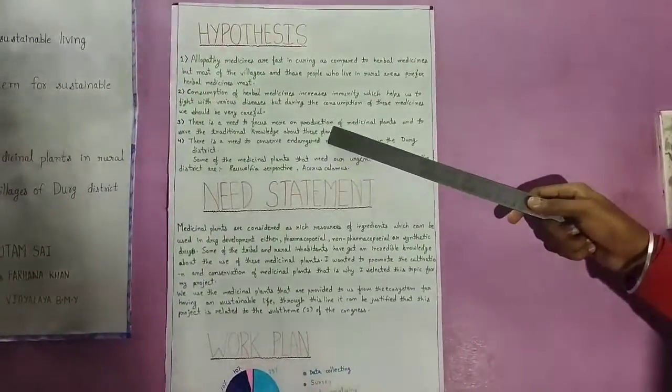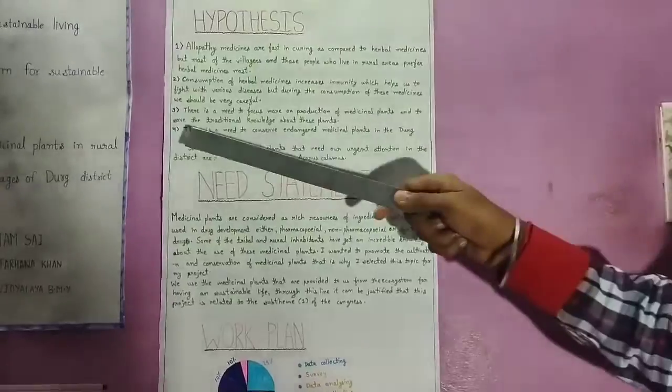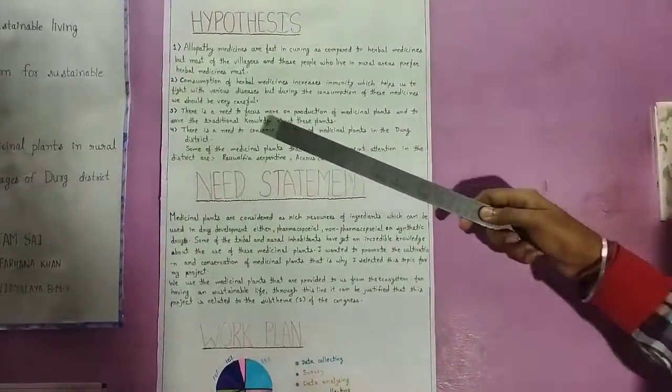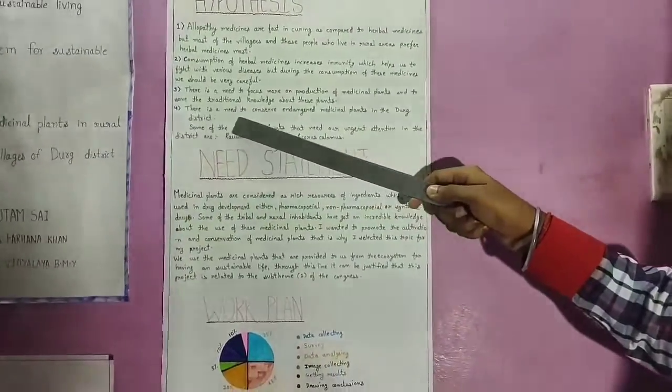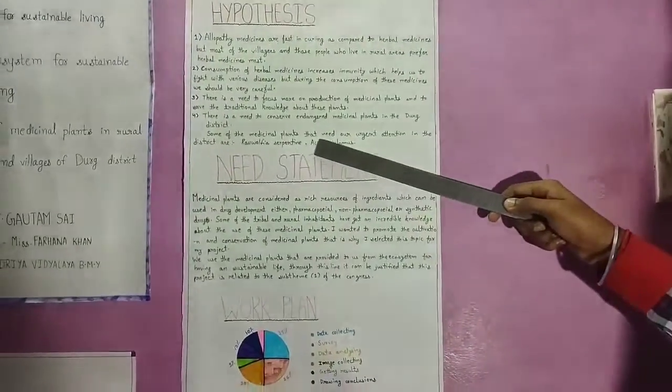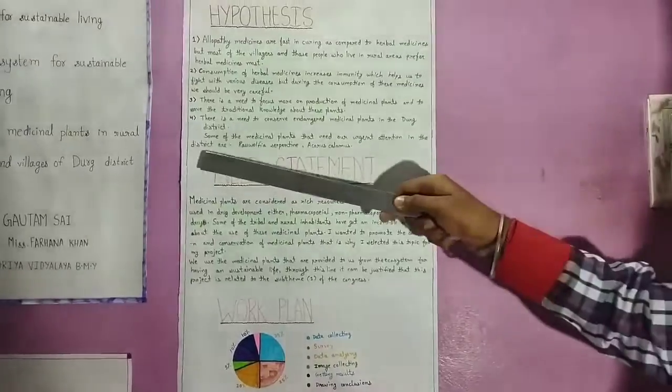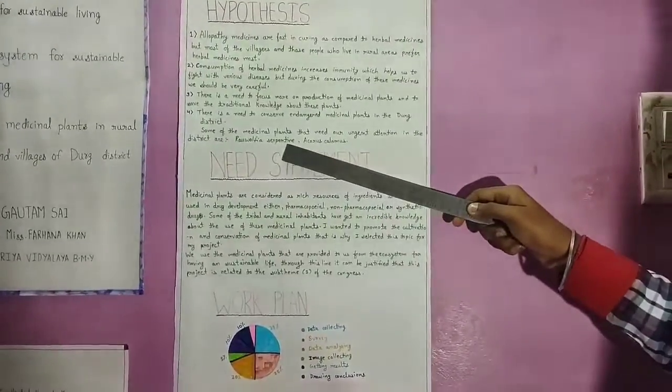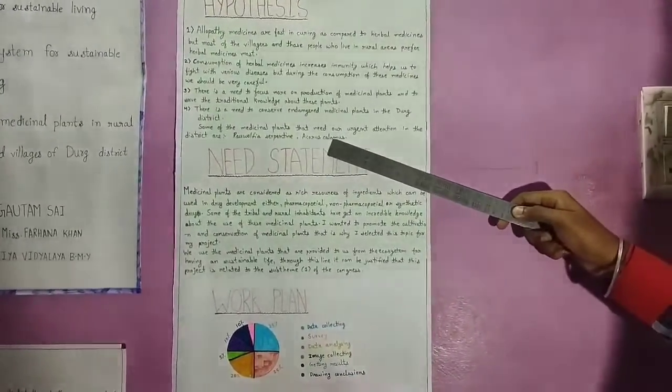Hypothesis 3: There is a need to focus more on production of medicinal plants and to save the traditional knowledge about these plants. Hypothesis 4: There is a need to conserve endangered medicinal plants in the Durk district. Some of the medicinal plants that need urgent attention in the district are Rauvolfia Serpentina and Acorus Calamus.